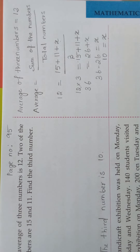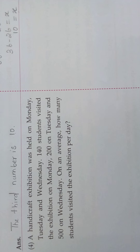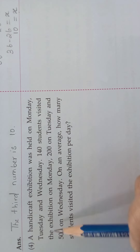So instead of finding the average, they have given the average and did not give one number. So we keep it as x, simplify, and get the value of x. The third number is 10. Very interesting! Come, we will see the next word problem.